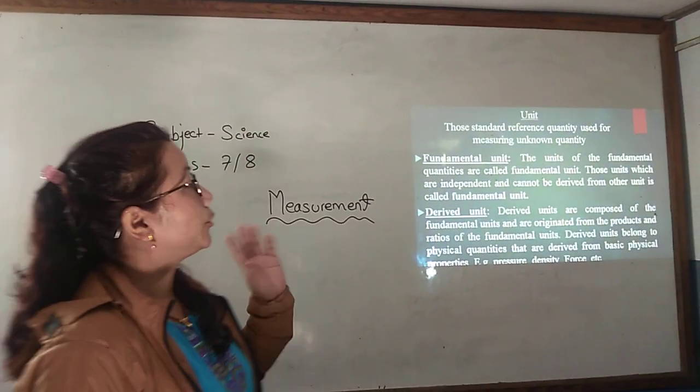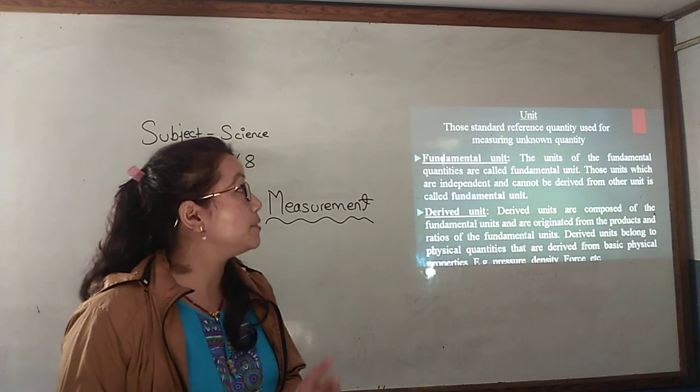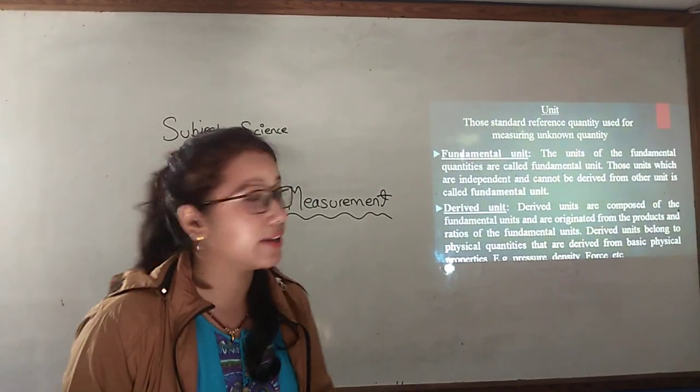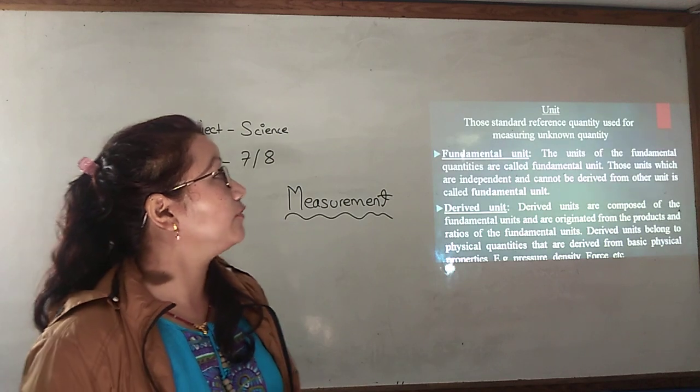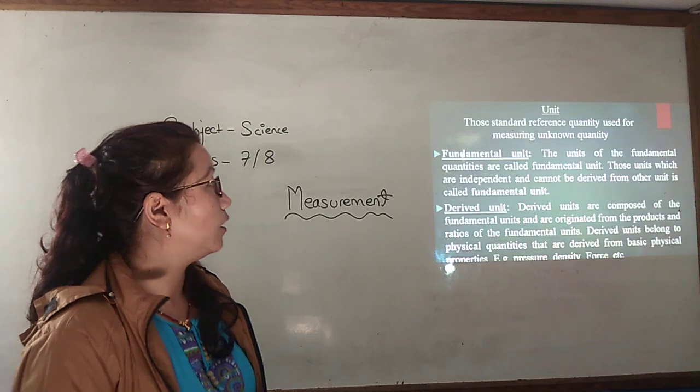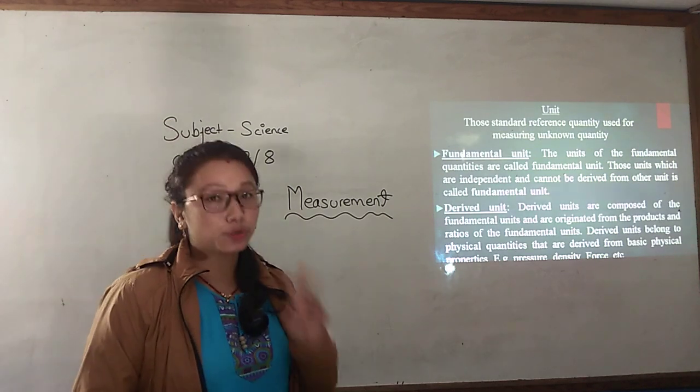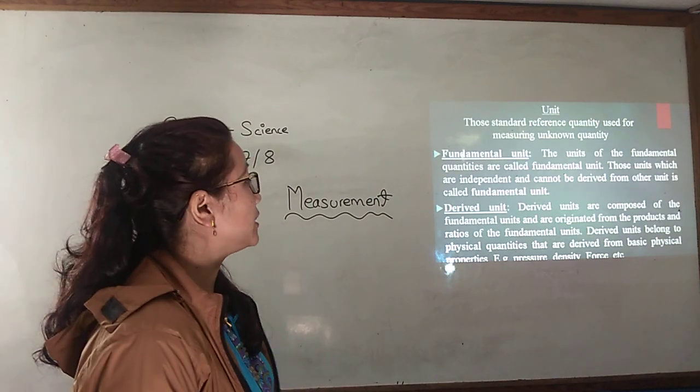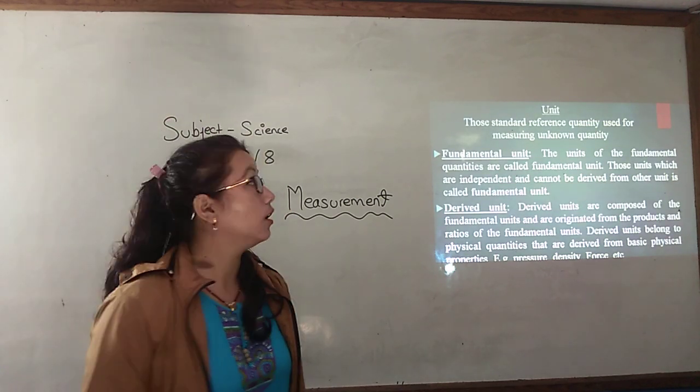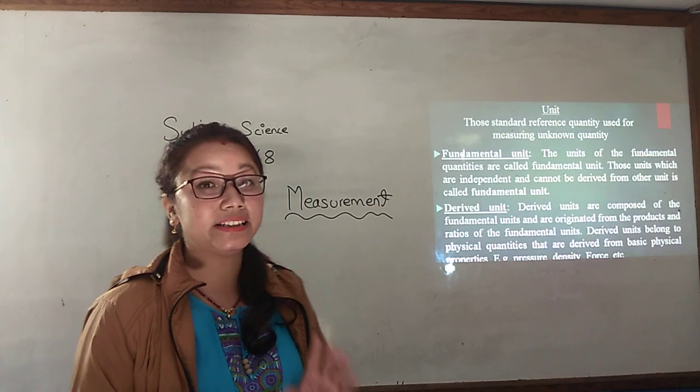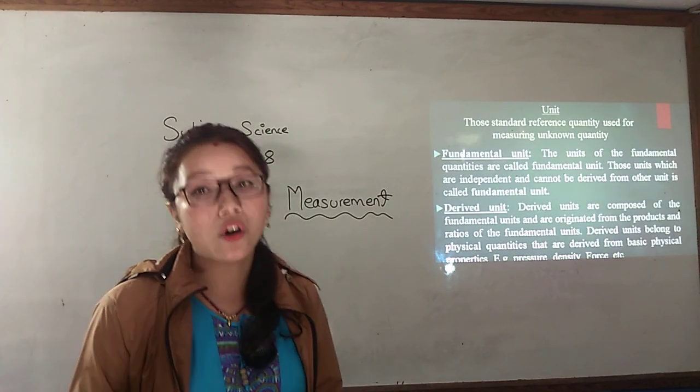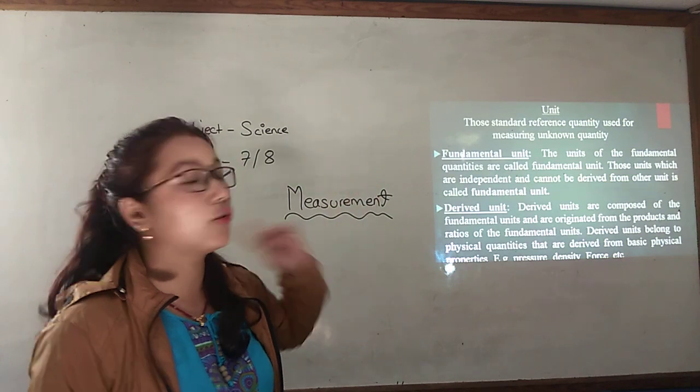Unit. For that fundamental quantities, for comparing of the unknown quantity, we have the standard reference quantity that is called unit. Under the unit there are two types of unit: that is fundamental units and derived units. Fundamental units, the unit of the fundamental quantity are called fundamental units that is independent and cannot be derived from the other units.